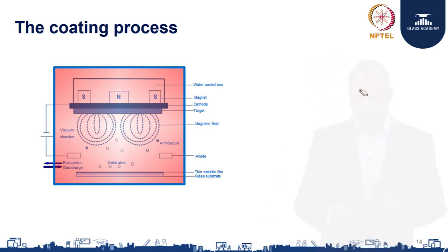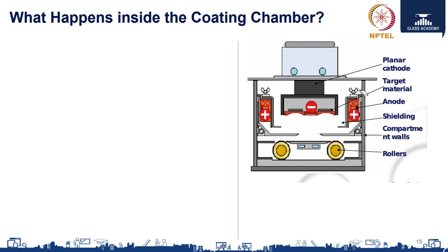How is the coating process done? We will see it in more detail here. This is the typical cross section of a sputtering chamber. You can see that this entire chamber is kept under very high vacuum — the vacuum level could be in the range of 10 to the power of minus 6 millibar. In this sputtering environment, the glass moves on rollers at a fixed line speed. The material to be deposited on the glass is fixed here as a target material, and the glass moves on top of the rollers at a fixed line speed.